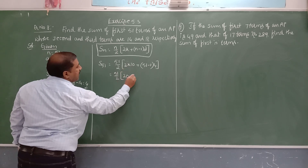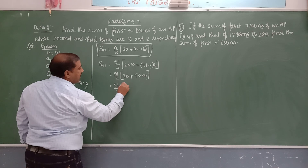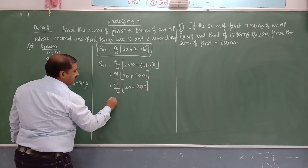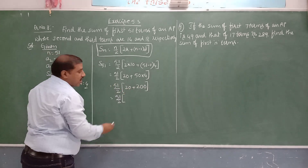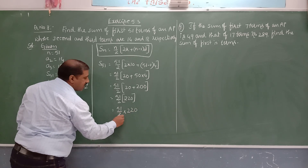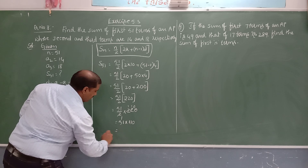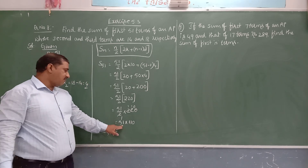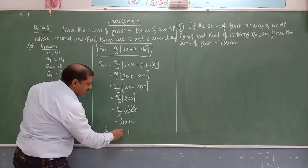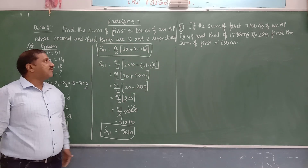Simplifying: 51/2 × 220 = 51 × 110. Multiplying: 51 × 110 = 5610. Therefore the sum of the first 51 terms of the given arithmetic progression is 5610.